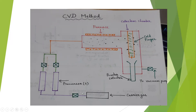The needle valve has control over the flow of the carrier gas, meaning the concentration as well as the rate of flow of the carrier gas is controlled with this needle valve. There is also a reservoir — these reservoirs are for the precursors. A particular precursor for the synthesis of the nanomaterial is taken in these reservoirs, and there are two needle valves here as well.